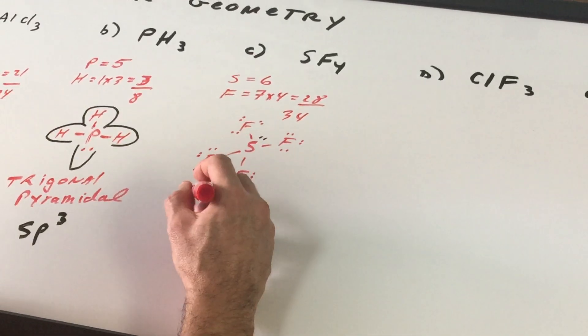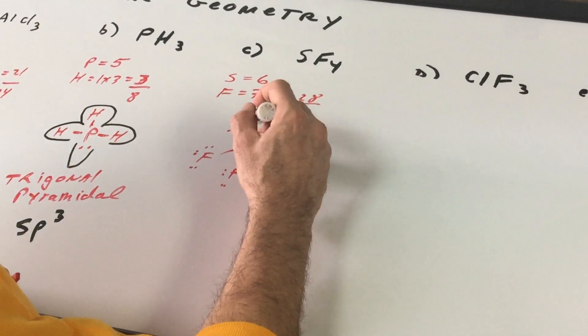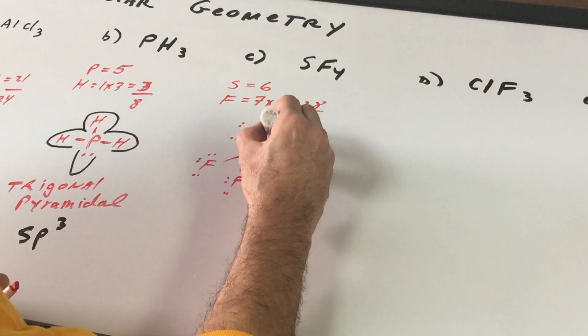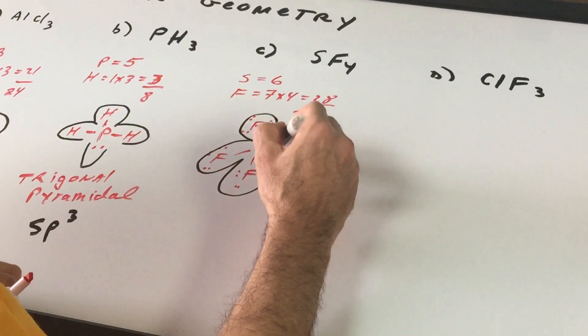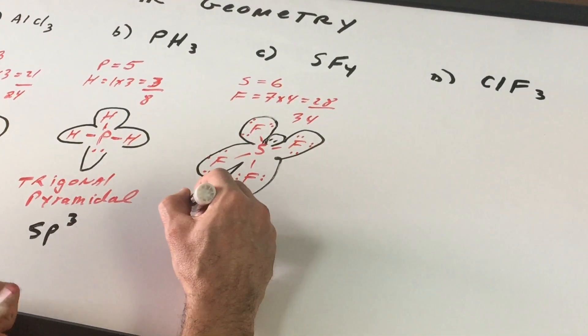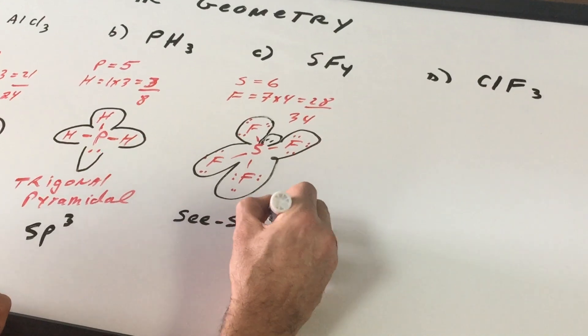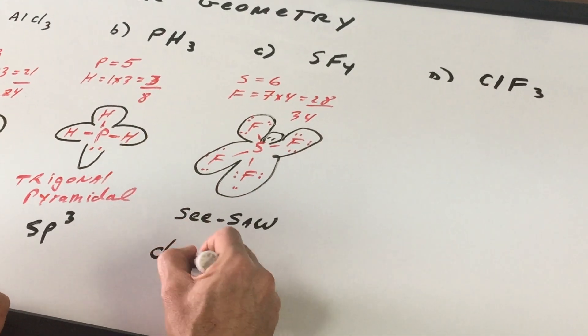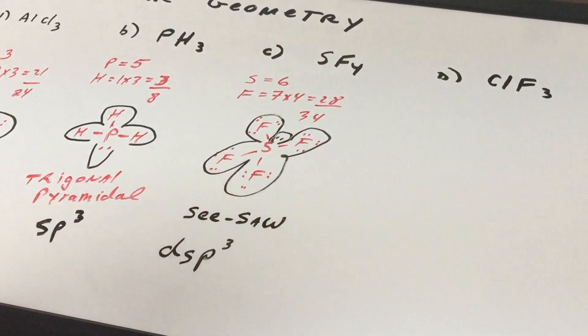So what shape would this be? There's four bonded regions. One, two, three, four and one that's unshared. So we have one, two, three, four and five. This is going to be called a seesaw shape. And the hybridization will be dsp3 because notice we're using a total of five orbitals.